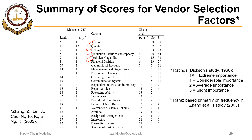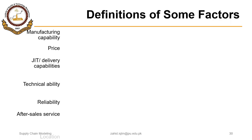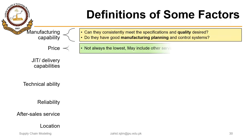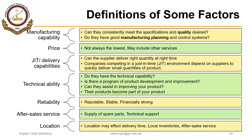The point is that a number of factors could be considered, and this is of course a long list. Generally, organizations might use somewhere between three to six factors practically in order to select and evaluate suppliers. Each organization, after listing down the factors it will consider, will define those factors.